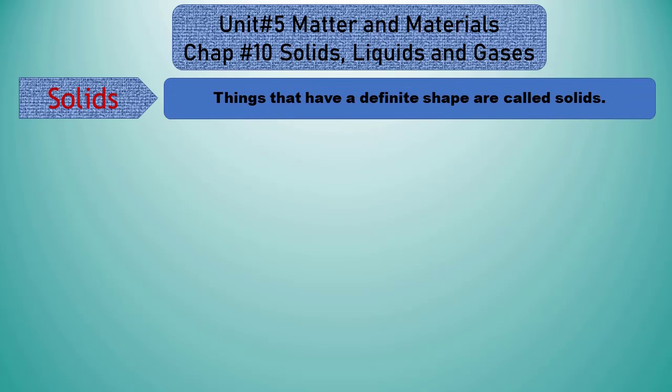Things that have a definite shape are called solids. We can recap: solid objects without a container, like wood, metal, and bricks — these are solids.